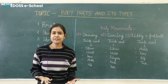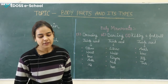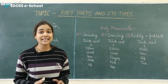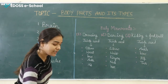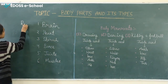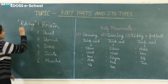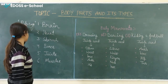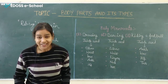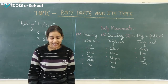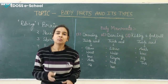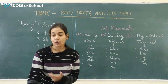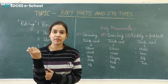Bones protect our organs from getting damaged. Each bone has a different function. Heart, lungs, and stomach are protected by the rib cage. Long leg bones give shape to our leg and support to move. Skull bones protect our eyes and our brain. Arm bones give shape and support to our hand.